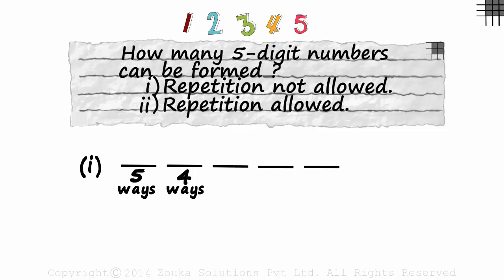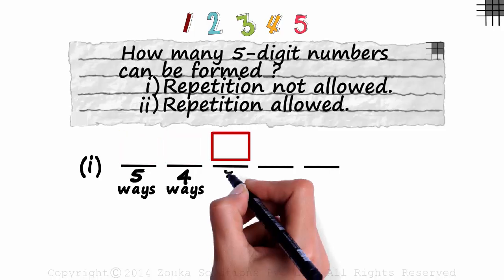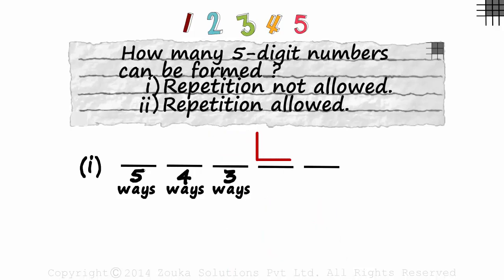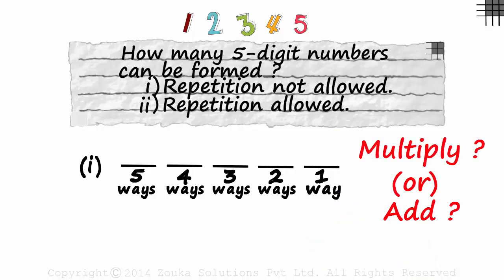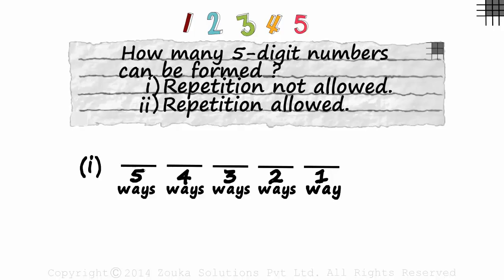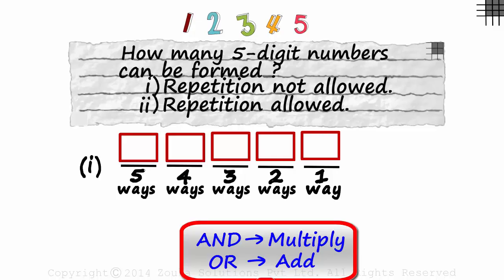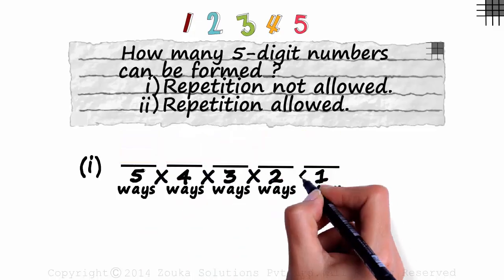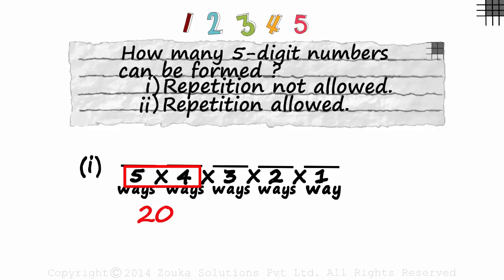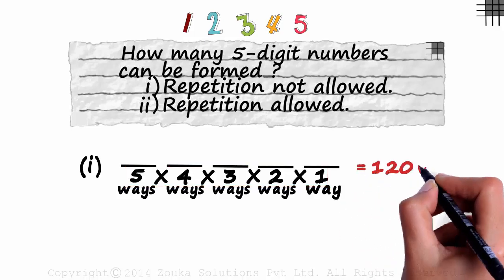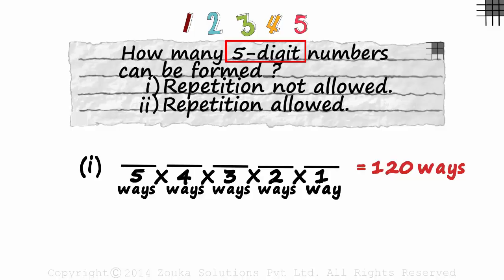Now as two digits have been used in the first two slots, the third one can be filled in three ways. Similarly, the fourth one in two ways and the last one is just one way. Do we multiply these or do we add them? Don't forget the basic rules of counting. Or is addition and is multiplication. As we are filling the first and the second and the third slots and so on, we will be multiplying these. Five times four is twenty, twenty times three is sixty, and sixty times two is one hundred and twenty. There are one hundred twenty five digit numbers that can be formed using these five digits, provided repetition is not allowed.